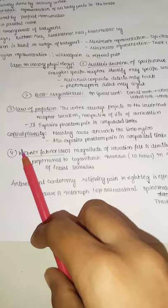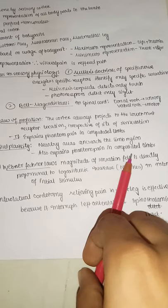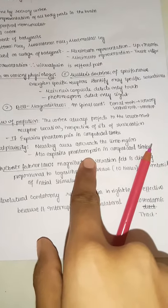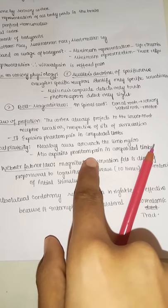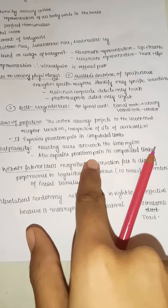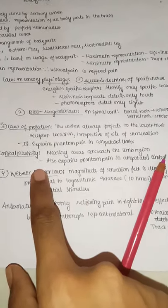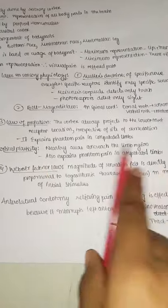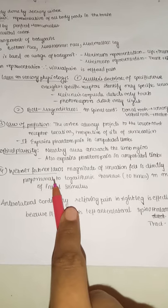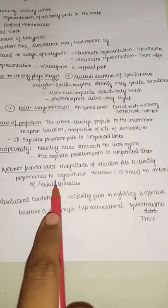Cortical plasticity: nearby areas encroach onto the amputated limb region, also explaining phantom pain in amputated limbs — pain may be felt in the nearby region of the cut area.